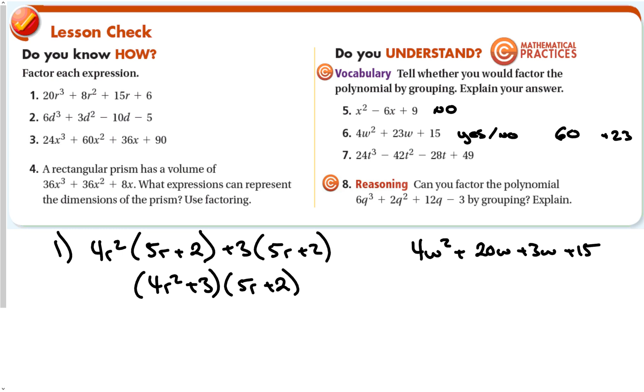So, yes, you do use grouping eventually, but not right off the bat, as opposed to number 7 when you use grouping right away. And you can tell you can use it right away because it has an exponent to the third power, and it has four terms.